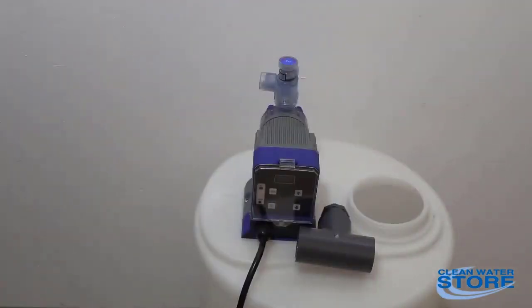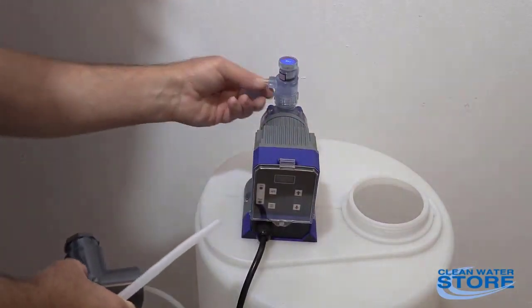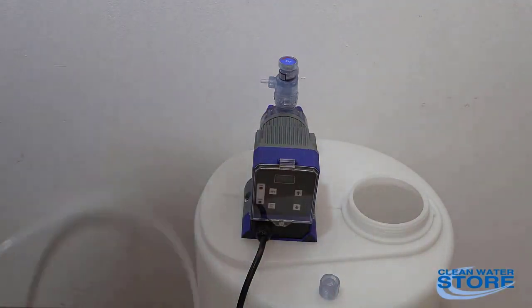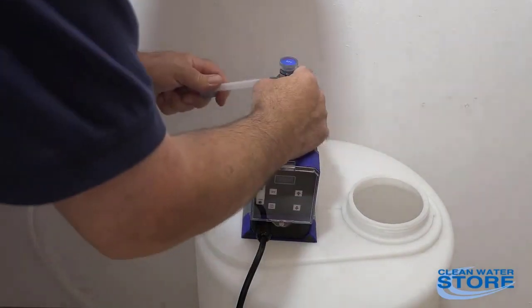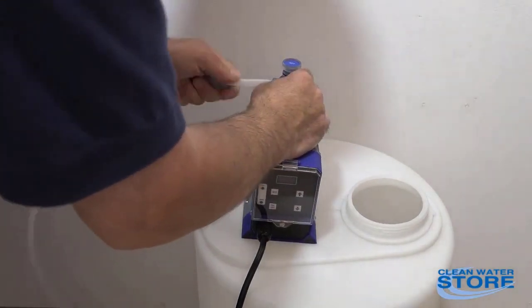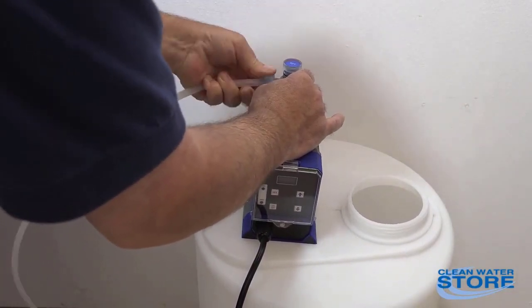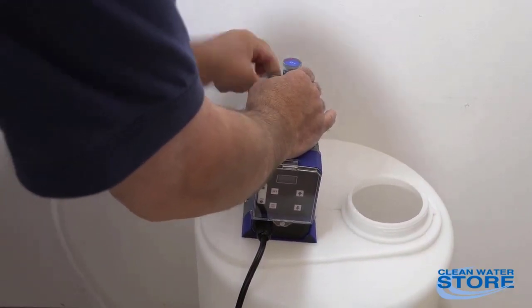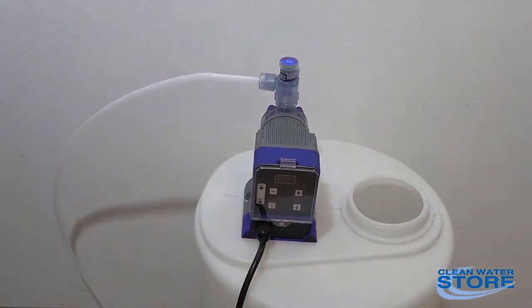So we attach that in and go ahead and attach this other end here to the pump. This is going to be the outlet, and they're labeled right here. You warm these up a little bit, they kind of slide on there. You want to help hold them on there. The first thing, if your pump doesn't prime, the first thing you're going to want to check is these fittings, because if you're leaking air through there, the pump won't prime.